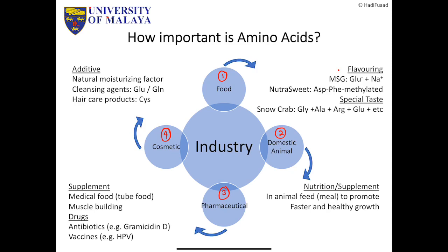The first industry is food, where you have flavoring such as MSG — monosodium glutamate. Everybody knows MSG; if you don't, you definitely know Ajinomoto. It's a type of salt: monosodium glutamate, made from glutamic acid plus sodium. So it's pretty much an amino acid. If you've read that MSG is not good — MSG is just an amino acid, so it should be good for your body.